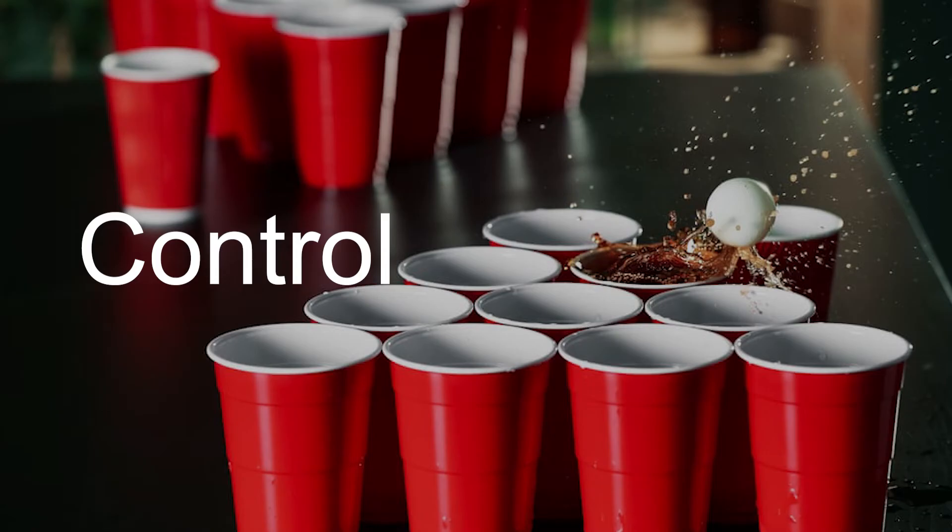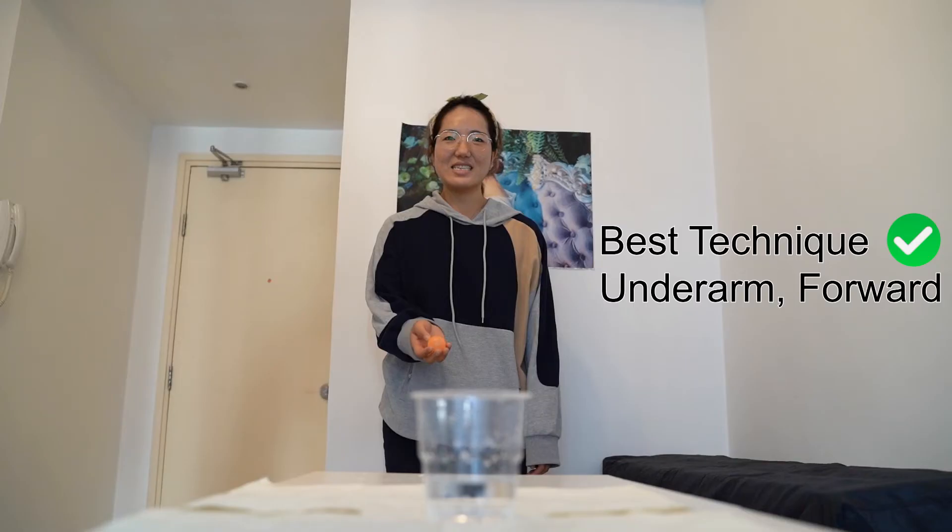After identifying and analyzing the different factors in the improvement phase, we can identify that the underarm throw forward facing was the best technique to throw the ping pong ball into the cup. We infer that the underarm throwing technique facing the cup gives the player the most stability, control, and consistency in his or her throw.